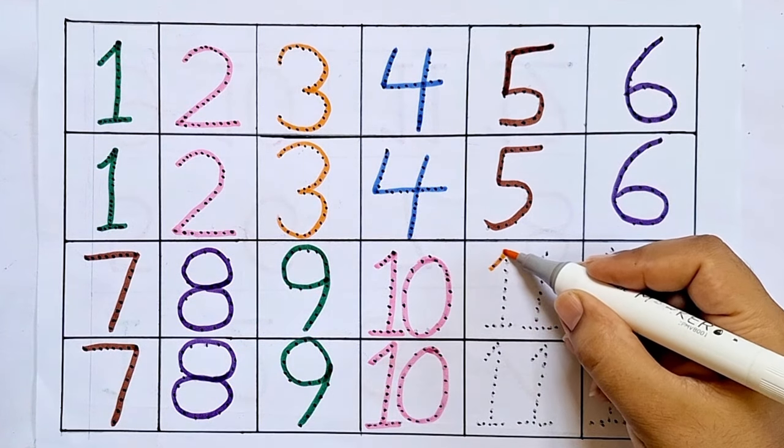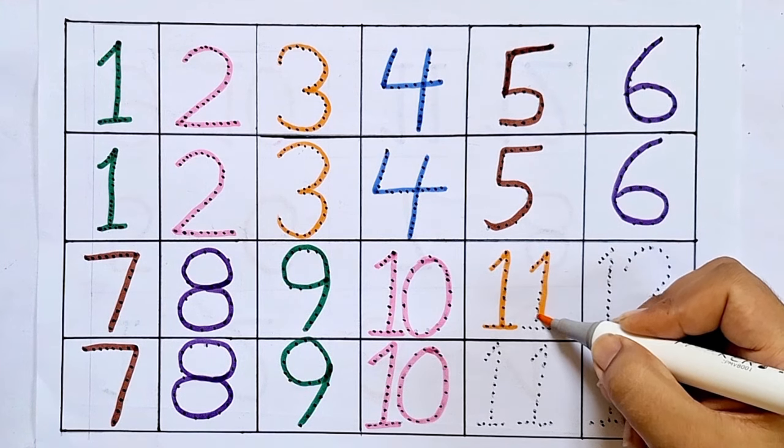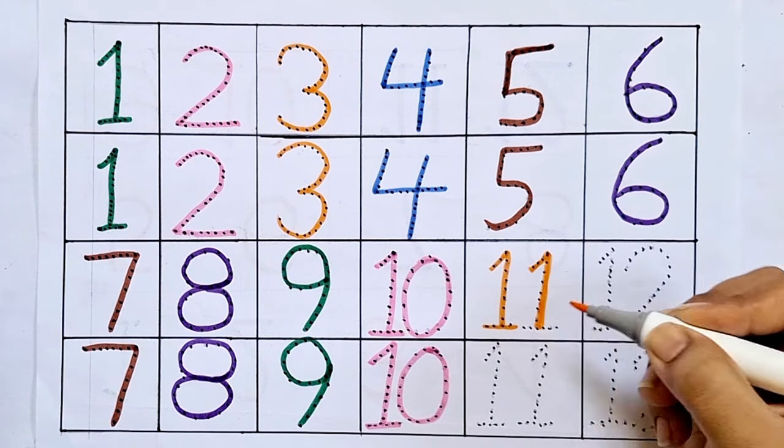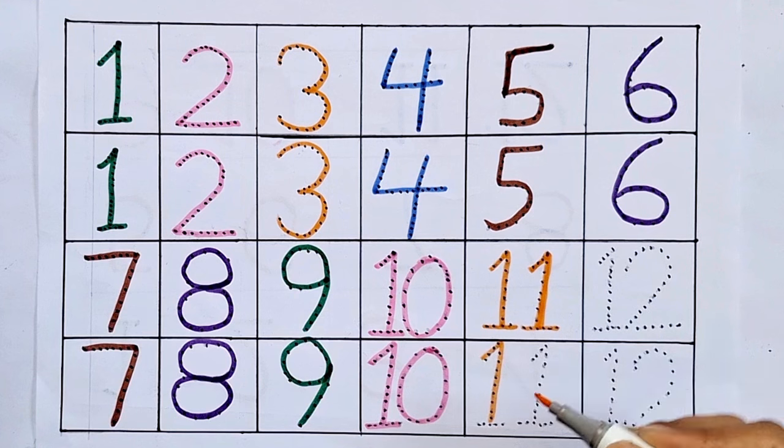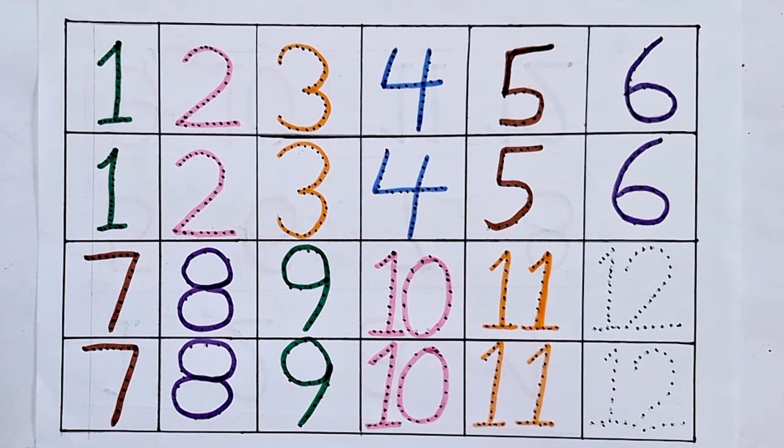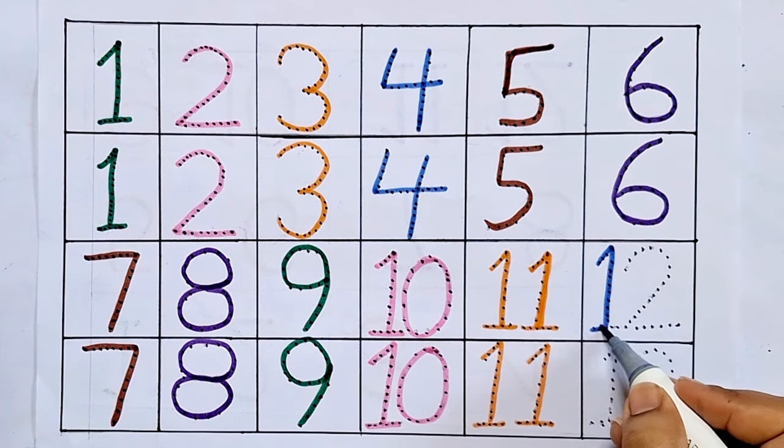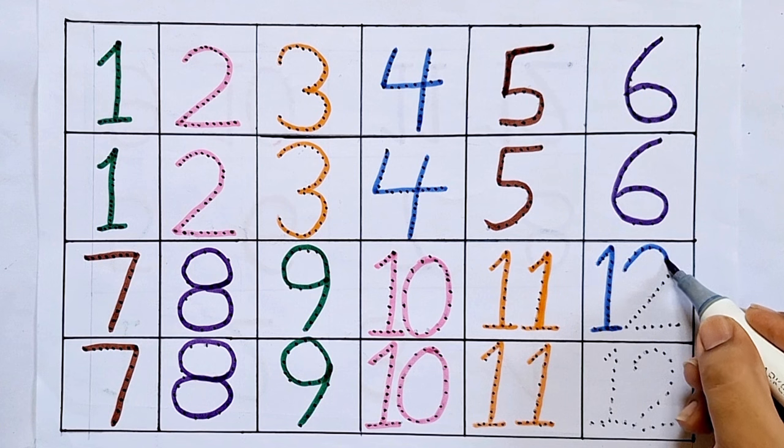Eleven, one one. After ten comes eleven. Twelve, one two. After eleven comes twelve.